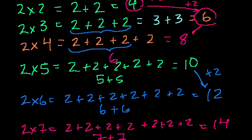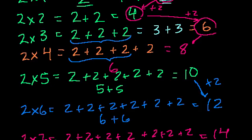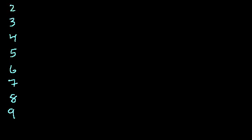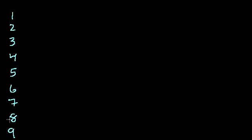Now that we see that pattern, let's complete a multiplication table. I'm going to write all the numbers 1 through 9 across the top, and multiply each of those times 1 through 9 down the side. I encourage you after this video to complete it on your own going up to 12.